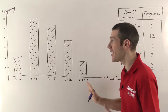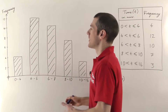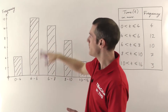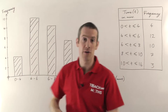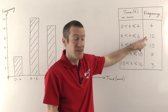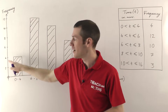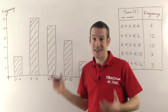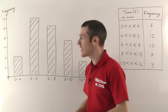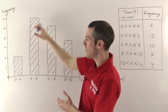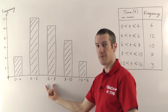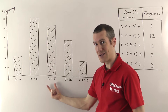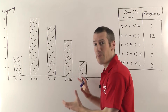All right, so there's a bar chart based on this data. We've got the frequency at the side, the time in minutes along the bottom, and I've drawn bars where the height of each bar corresponds to the number of people in that group. So the first bar, the 0 to 4 bar, has a height of 4. The second bar goes up to 12. The third bar goes up to 10, etc. Having drawn my bars the right heights, I've then just labelled the bars: this is the 0 to 4 bar, this is the 4 to 6 bar, the 6 to 8 bar, etc. And that's a bar chart.